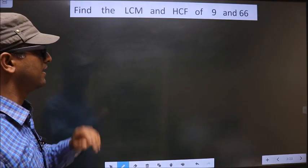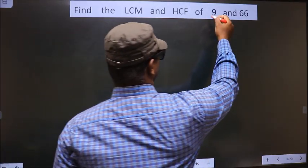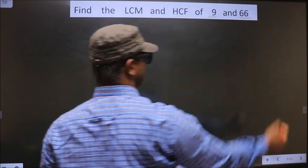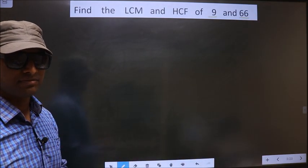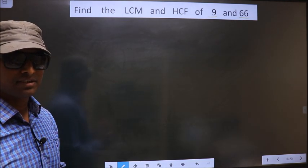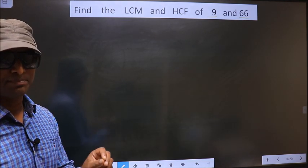Find the LCM and HCF of 9 and 66. To find the LCM and HCF, first we should do the prime factorization of each number separately.